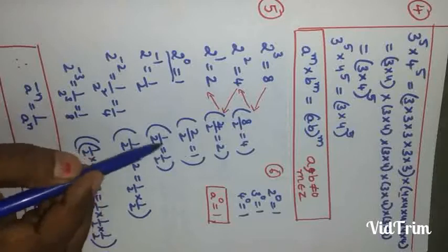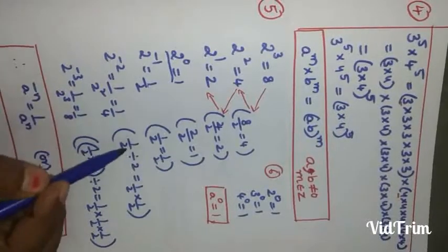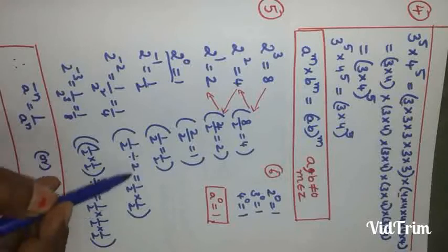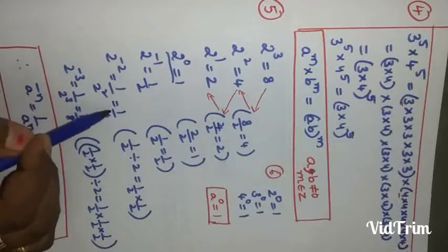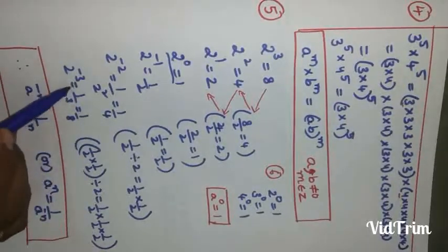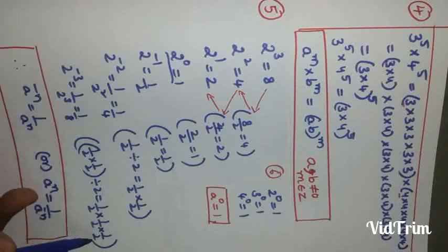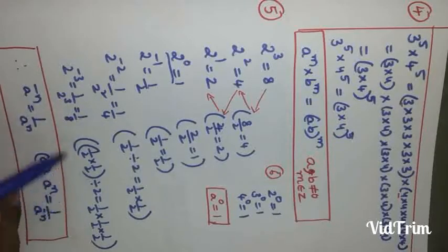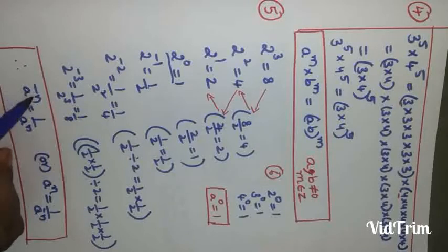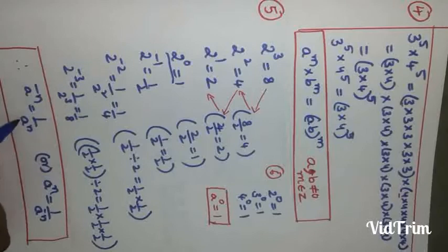Continuing the pattern: 1 divided by 2 gives 1/2, so 2^(−1) = 1/2. For 2^(−2): 1/2 divided by 2 equals 1/2 × 1/2, which is 1/(2^2) = 1/4. For 2^(−3): dividing again by 2, division changes to multiplication and reciprocal of 2 is 1/2, so 2 is multiplied 3 times giving 2^3 = 8, thus 2^(−3) = 1/8. From this we get the formula: a^(−n) = 1/a^n, or equivalently a^n = 1/a^(−n). By cross multiplication these two forms can be interchanged.